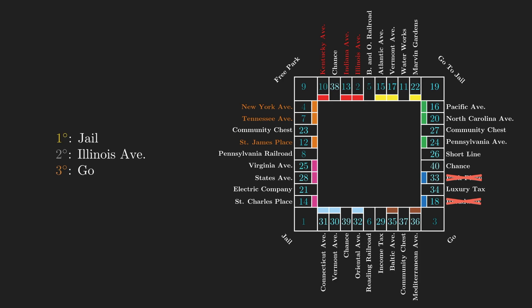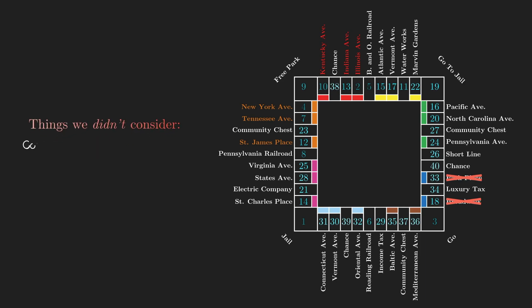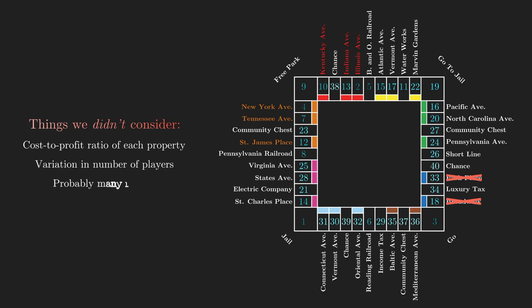Another thing worth mentioning is that railroads rank quite high in our list, but they may not be the best option, since you can't build houses or hotels there, and therefore you probably won't earn as much money with them as you would with properties. But I would be remiss to claim this is the definitive, absolute, mathematically proven rank of properties to buy. Remember, this is only based on how frequently we'll pass through the squares. The amount of money we can earn from each square is definitely an important factor to consider, and taking money into account may place more importance on seemingly bad squares.